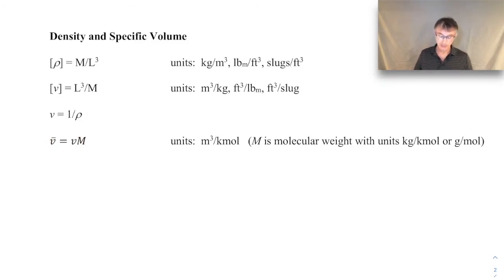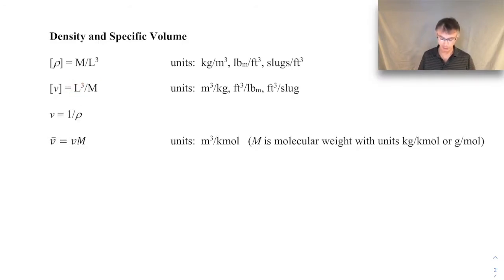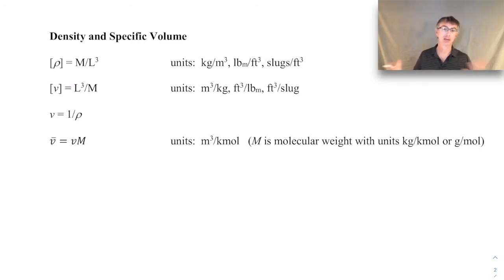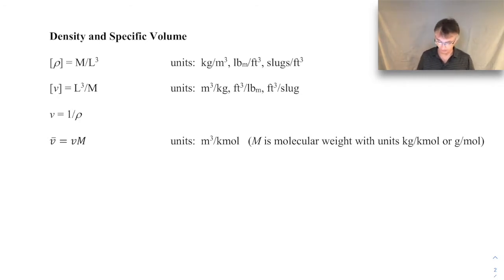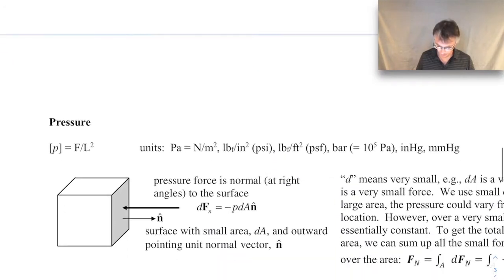That's it for density and specific volume. Just a quick reminder of the physical significance: specific volume is the volume taken up by a certain mass of a substance. So if you have one kilogram of air, how much volume does it take up under certain temperature and pressure conditions? That's one we'll use frequently. Let's move on to pressure.